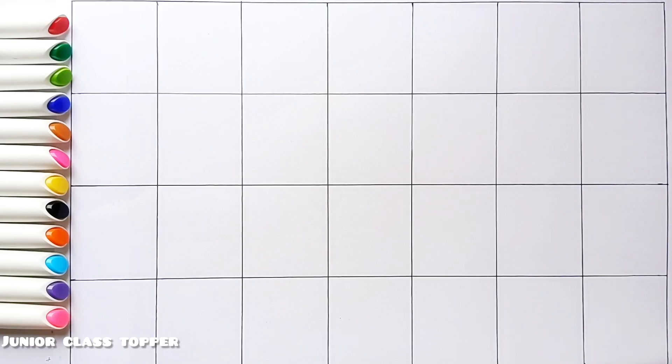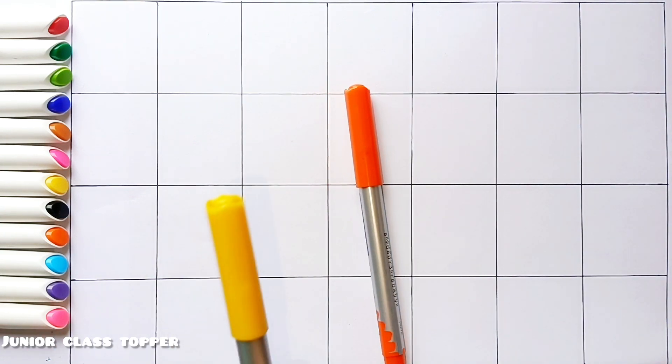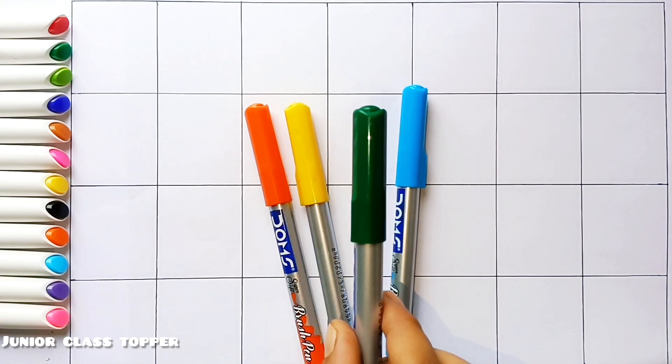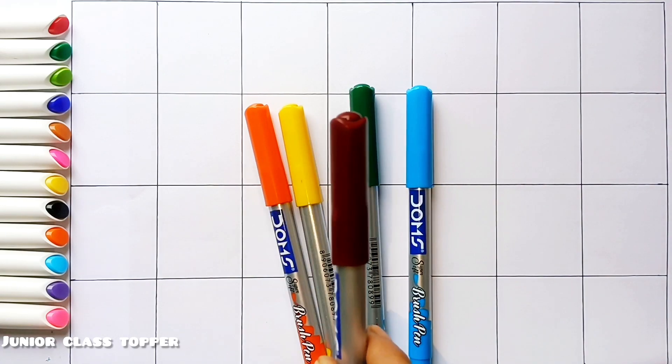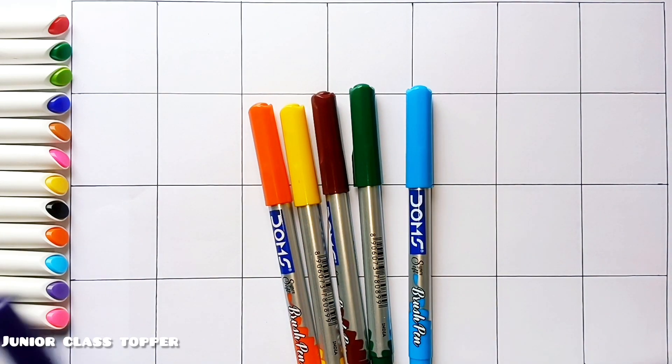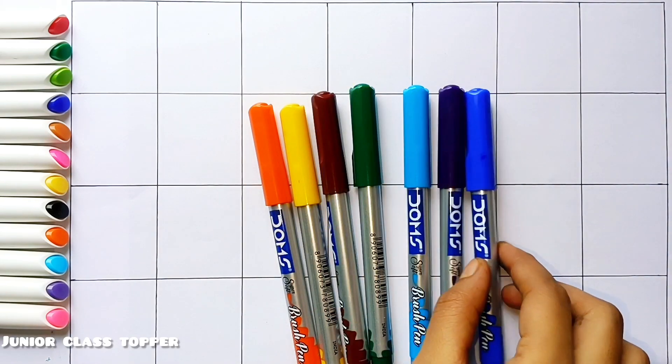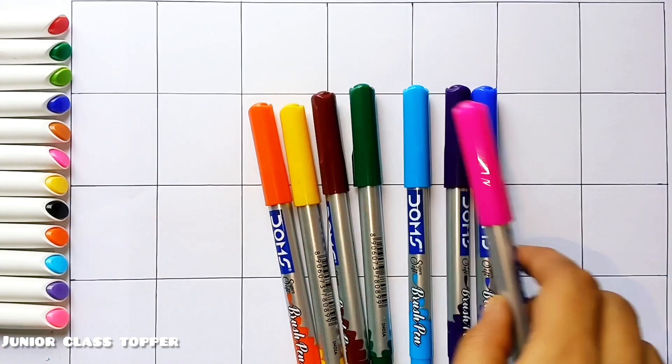Hello kids, how are you? First we learn some color names. Orange color, yellow color, light blue color, green color, brown color, violet color, royal blue color, pink color.